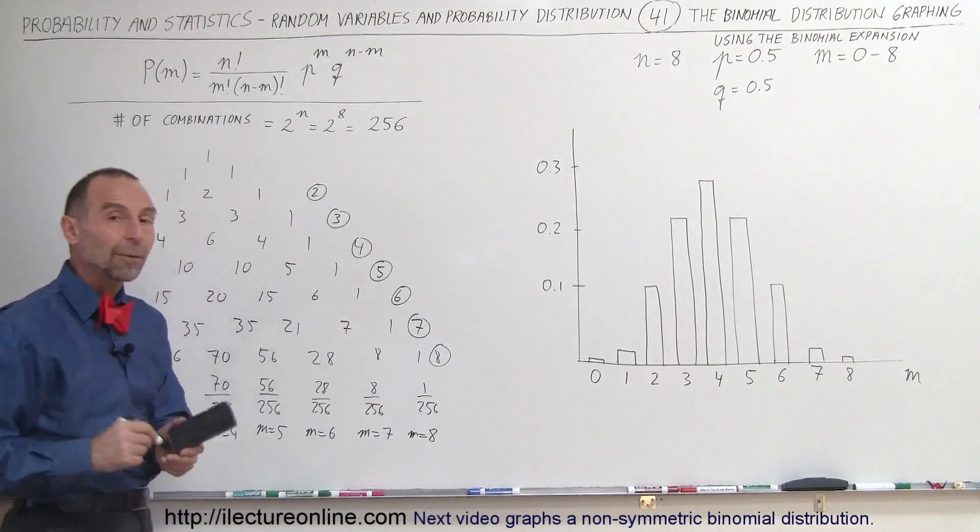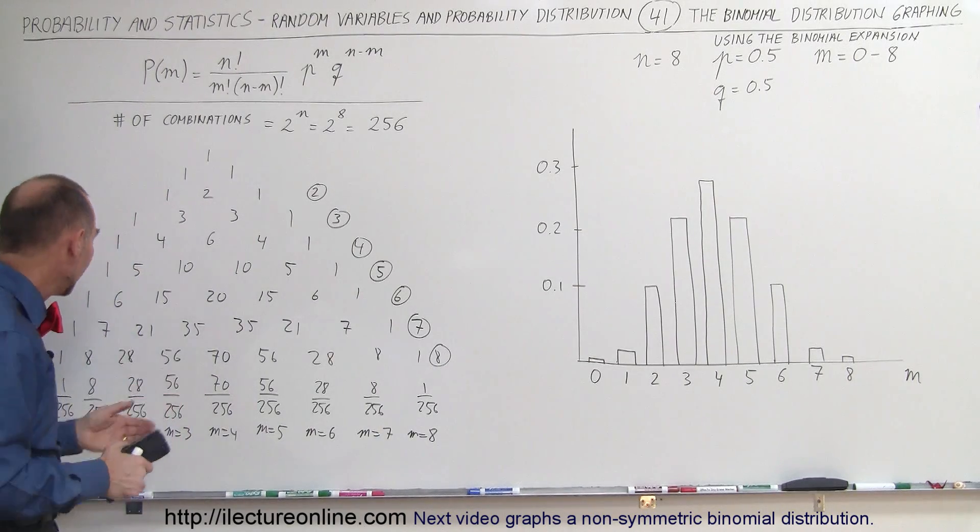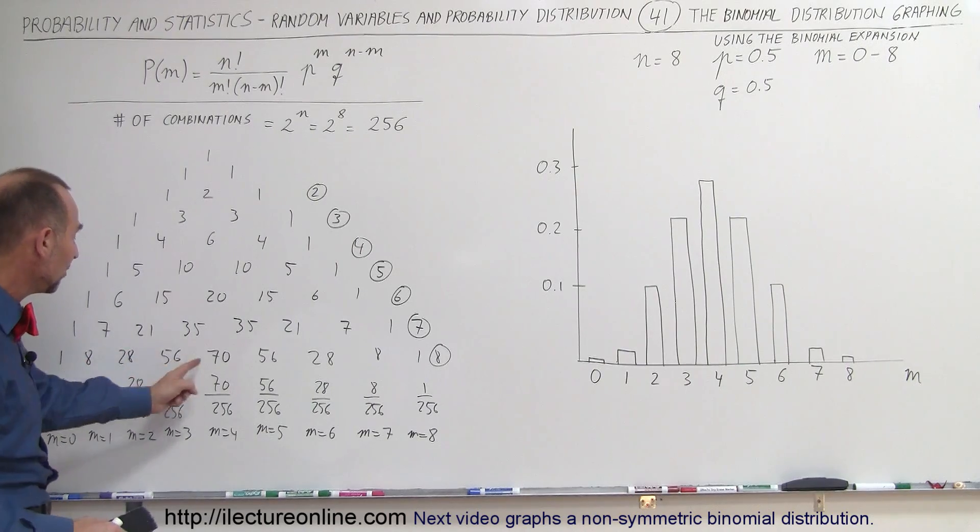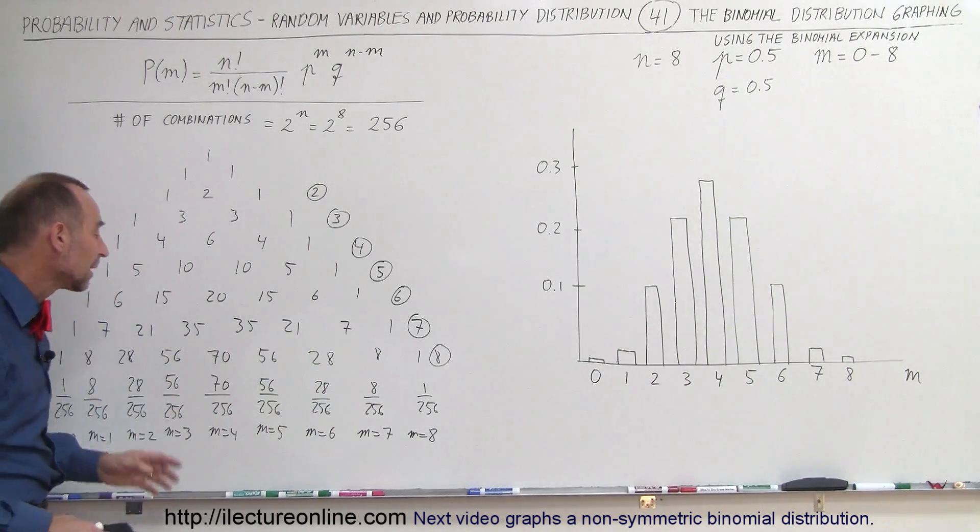So in this case, that's the probability of occurrence to have 1 success, 0 successes, 1 success, 2 successes, 3, 4, 5, 6, 7, and 8.